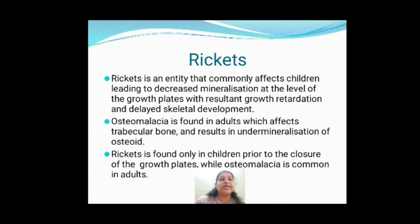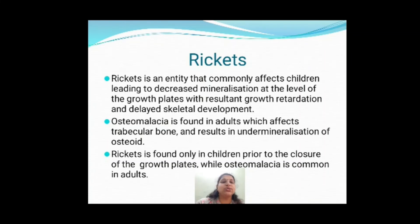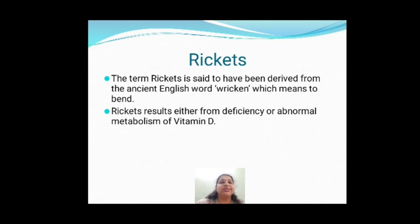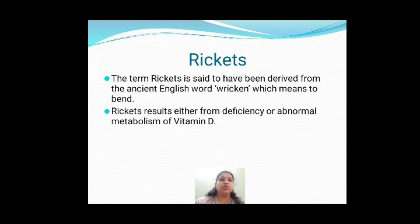Rickets: I hope you all have an idea of what rickets is. Rickets is caused by vitamin D deficiency and affects children. There is going to be decreased mineralization at the level of growth plates, resulting in retarded growth. Osteomalacia is the same vitamin D deficiency condition seen in adults. The word 'rickets' is derived from 'ricken,' meaning to bend — the bones will be bent. The rachitic deformities you are supposed to know.